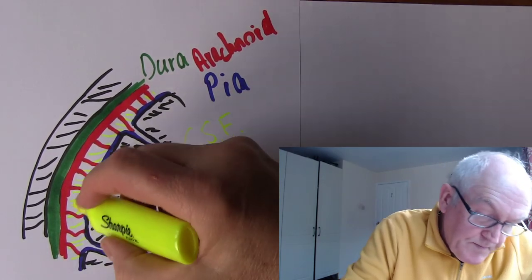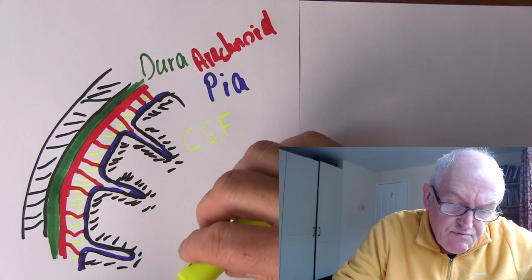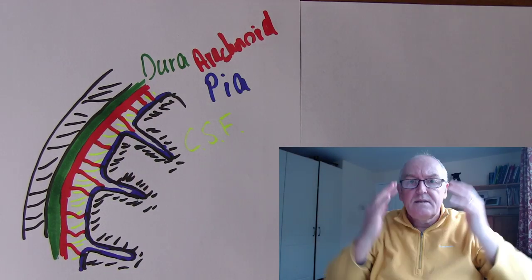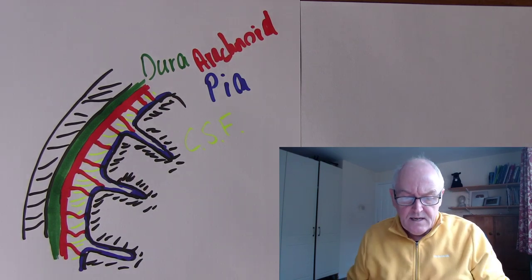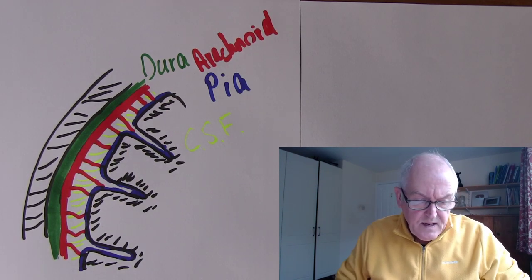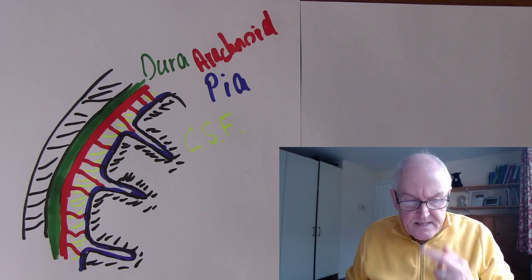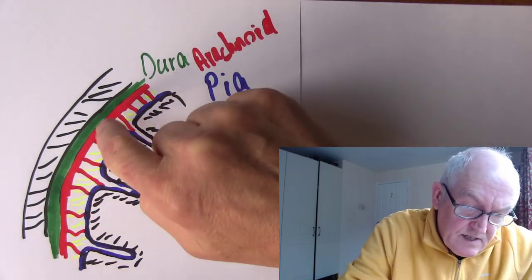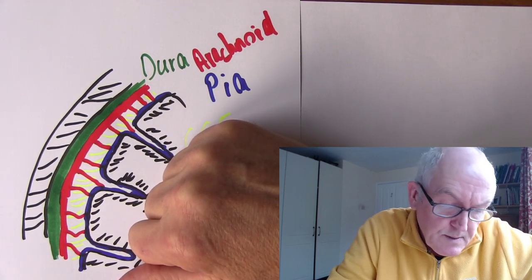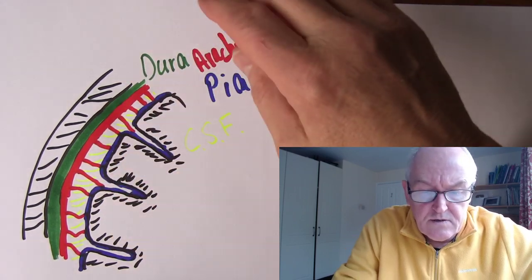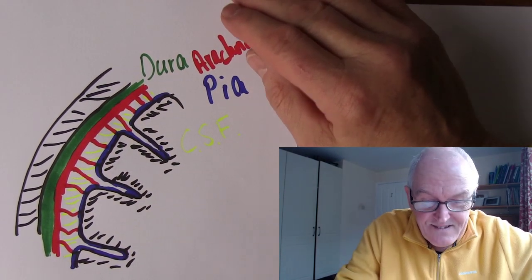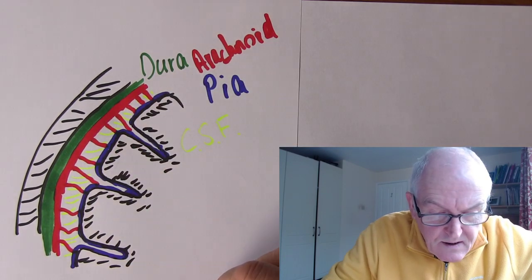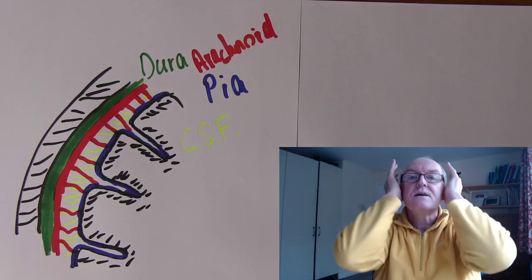This subarachnoid space is absolutely critical because it is filled with cerebrospinal fluid, the CSF. The brain is essentially floating in this fluid, which goes all around the cranium and down the spinal cord — so the entire central nervous system floats in CSF. It is a vital shock absorber; it has been said that without CSF, simply stepping off a curb would be enough to bash the brain against the inside of the skull and potentially knock us out.